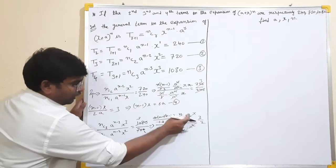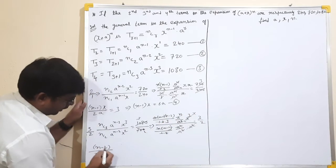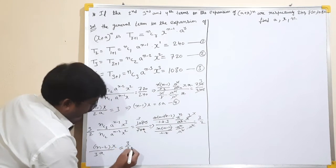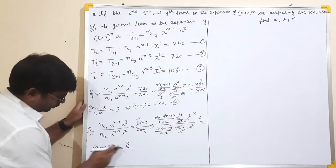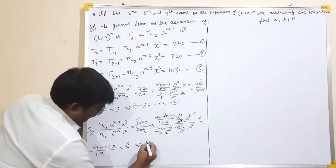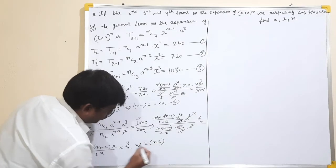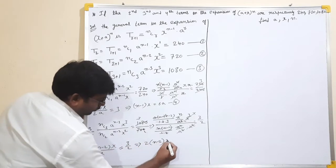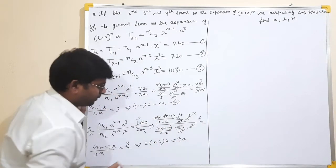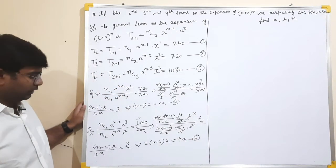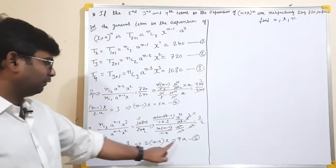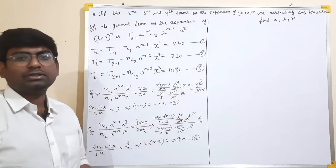So N minus 2 into X equals 9A — that is equation 5. Cross-multiplying, 2 into (N-2) into X equals 9A. So equation 5 gives us (N-2) * X = 9A. Now dividing equation 5 by equation 4: (N-2)*X over (N-1)*X equals 9A over 6A, which is 3 by 2.